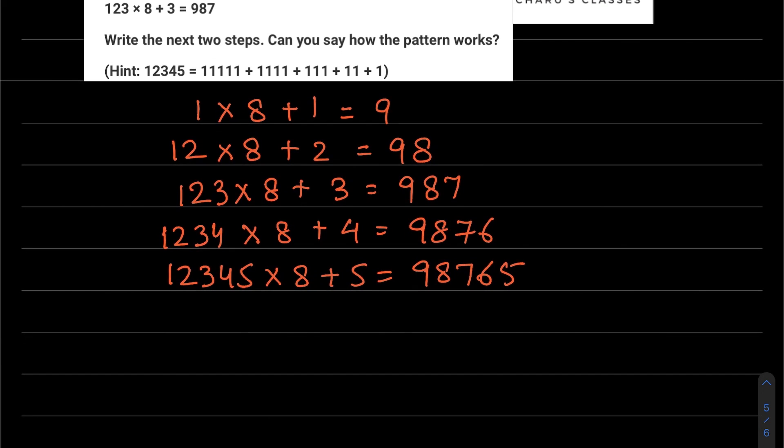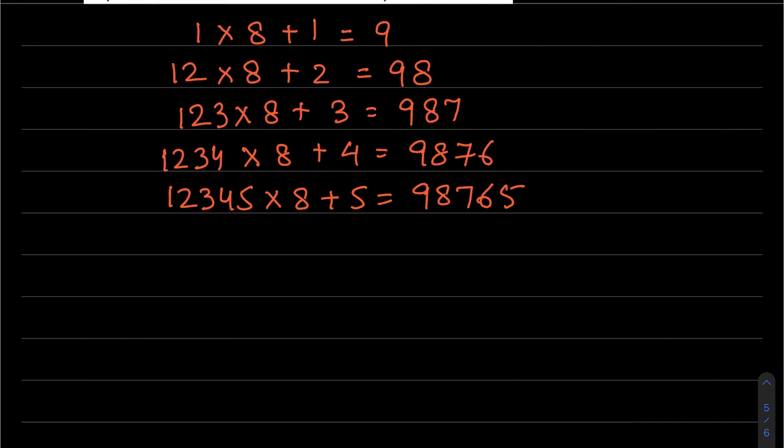As you can see, this question has a pattern given. If you look at the first, it is number 1, then 1-2, then 1-2-3, 1-2-3-4, then 1-2-3-4-5. So next it will be 1-2-3-4-5-6. The pattern on the right side is 9, then 98, then 987, then 9876, then 98765. Following this pattern, the next will be 987654, and then 9876543.